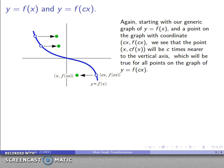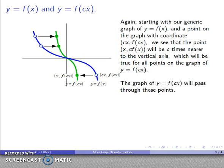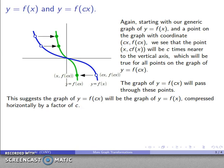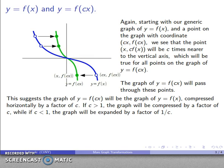I can do that for all points. Again, the farther away I start, the more I'm shifted in absolute terms; if I start close by, I don't get too much closer. This suggests the graph of y equals f of cx will be the graph of y equals f of x compressed horizontally by a factor of c. If c is greater than 1, this looks like a compression; if c is less than 1, this looks like an expansion.